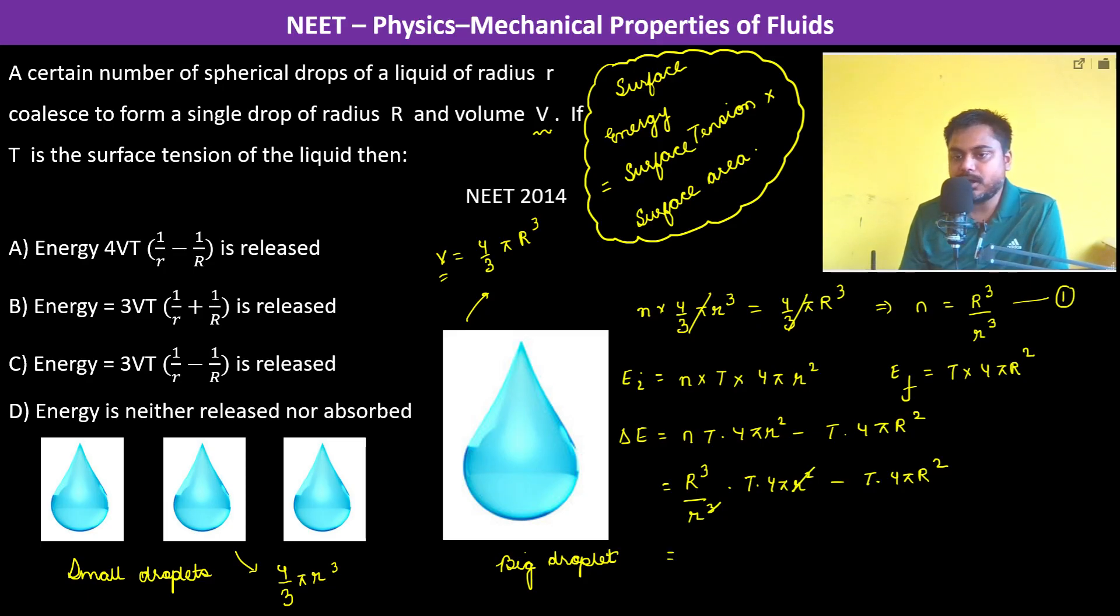So we keep R cube into T into 4 pi as a common term. Then this becomes 1 by r minus 1 by capital R.